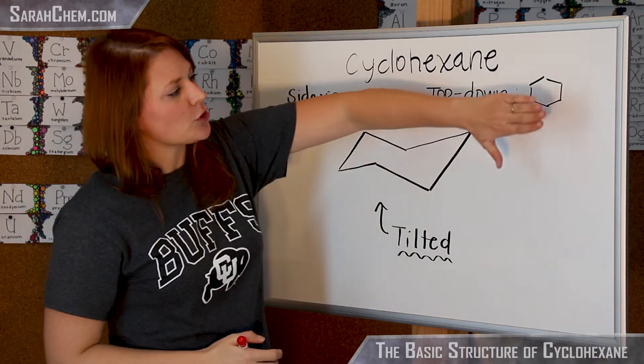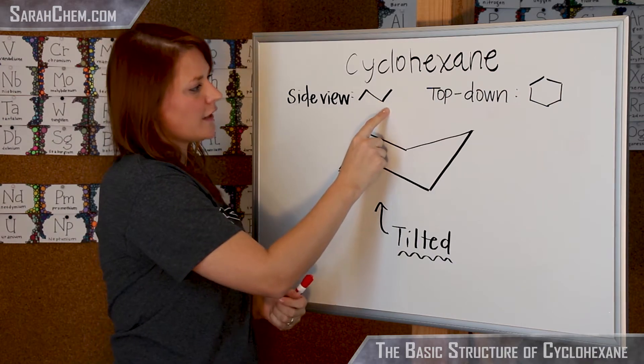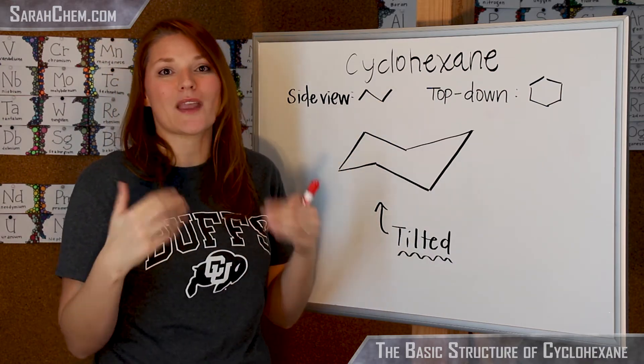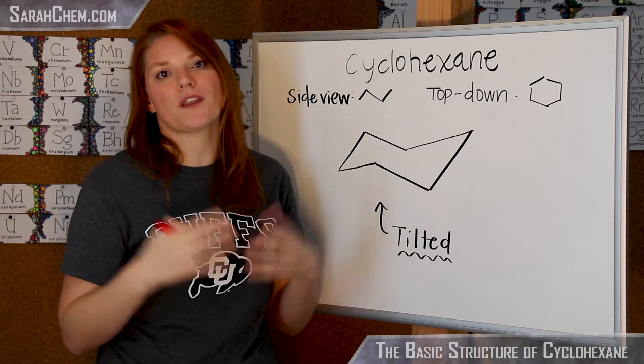Then what you could do is take this and tilt it 90 degrees and you'd get this side view. The problem with the side view is that some of your carbons are obscured and you can't see them, which is important when you're thinking about reactions.